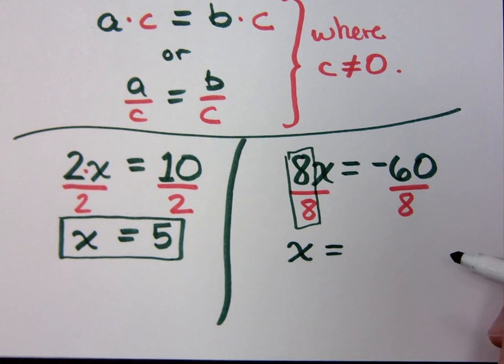I've got negative 60 over 8. Does 8 go into 60 evenly? I think it's 7 and a half. You say negative 7 and a half, something like that? Negative 7 and a half. All right.